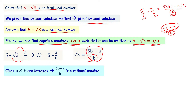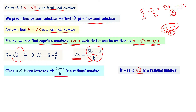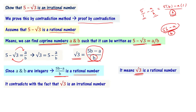Since 5b minus a divided by b is a rational number, that would mean root 3 is also a rational number. But we know that the square root of any prime number is irrational — root 3 is irrational, root 2 is irrational, root 5 is irrational, root 11 is irrational. So saying root 3 is rational contradicts the known fact that root 3 is irrational.